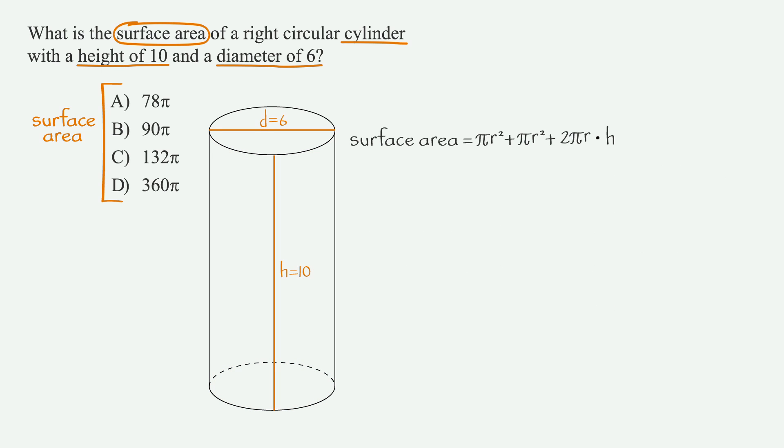Now let's plug some info into it. The question tells us that the diameter is 6. That means the radius is 3. So let's fill that into our formula. The question also tells us that the height is 10. So let's write that in. Now we just need to do a little math.